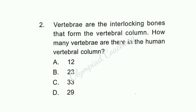Question number 2: Vertebrae are the interlocking bones that form the vertebral column. How many vertebrae are there in the human vertebral column? Option C is correct — 33. The vertebral column, also called the spinal column or backbone, is made up of 33 vertebrae.